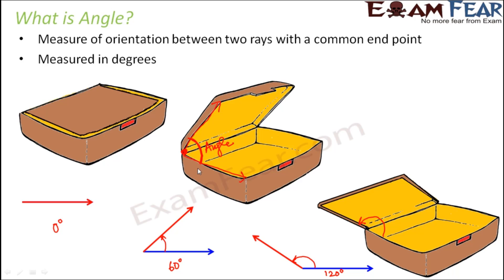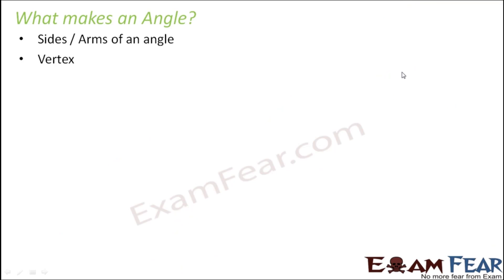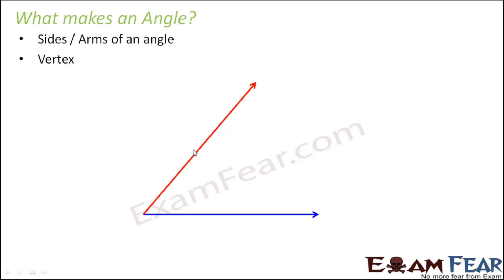An angle is represented in a diagram by two rays such that they have a common endpoint. Only if they have a common endpoint can they form an angle. If you have one ray like this and another ray like this with no common endpoint, obviously there can be no orientation between the two. The parts of an angle consist of the sides or arms of the angle — these are the two arms. And this common point is called the vertex.